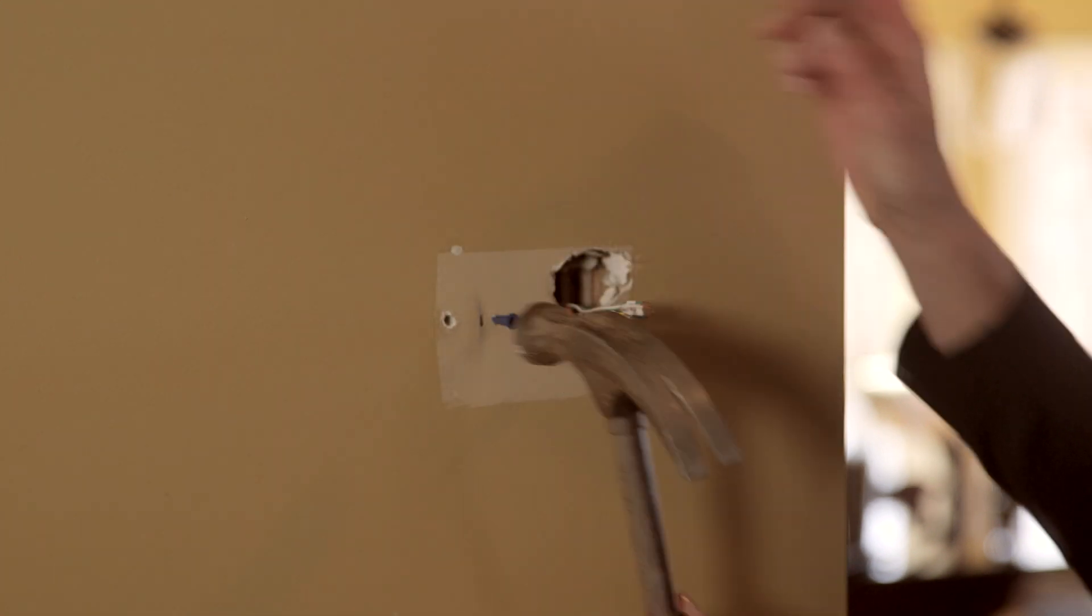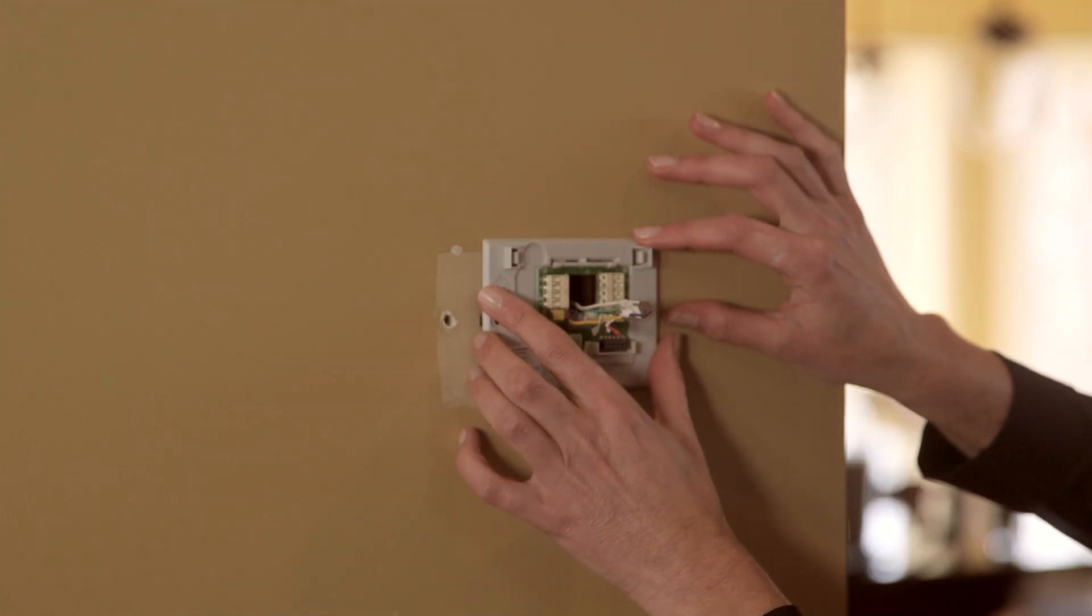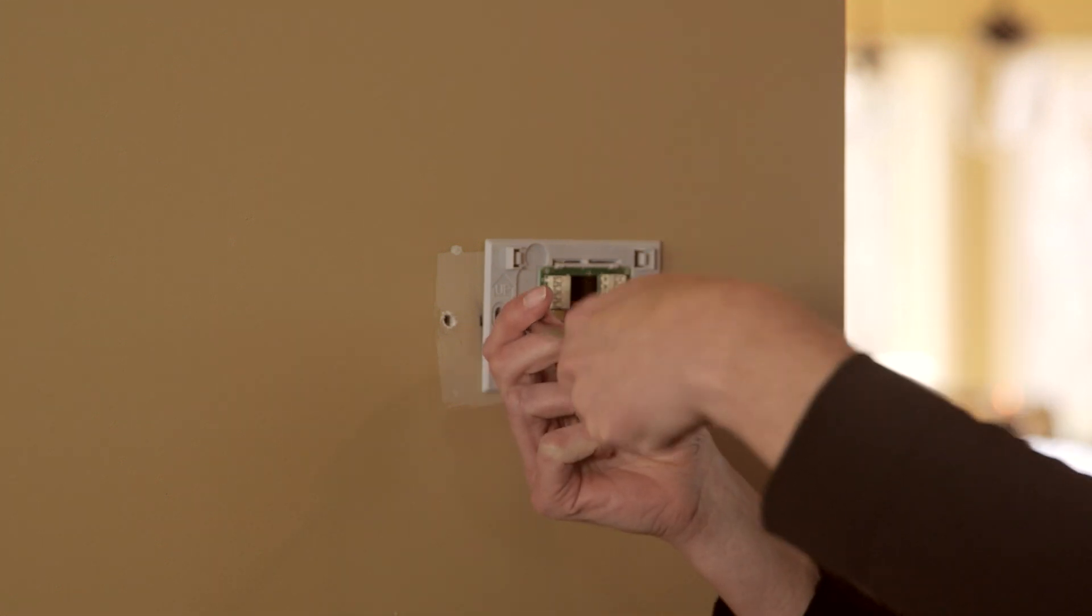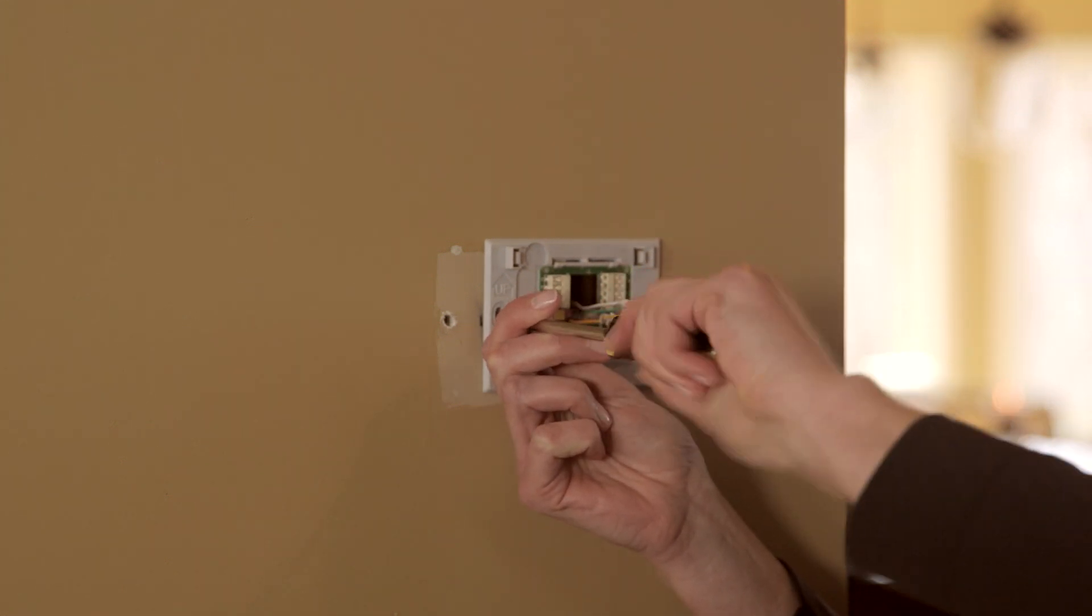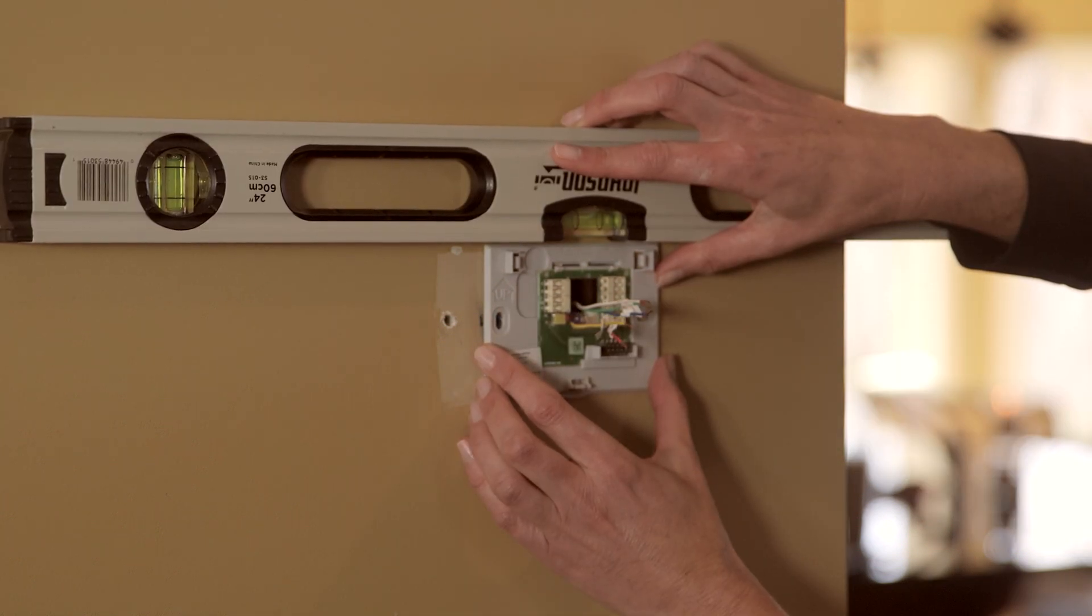Once you have pilot holes, tap the anchors into place. Position the wall plate so its holes are over the anchors and insert the screws. Use a screwdriver or drill to partially tighten the screws. Level the wall plate once more before final tightening.